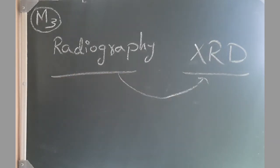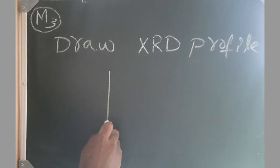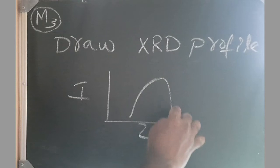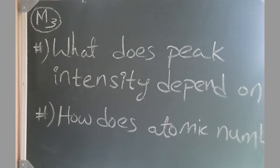Next question is he asked me to draw the X-ray profile, intensity versus 2θ. So he asked me to draw just one peak. Now the next question is, then what does peak intensity depend on? How does the atomic number of the metal affect the intensity of an X-ray peak?